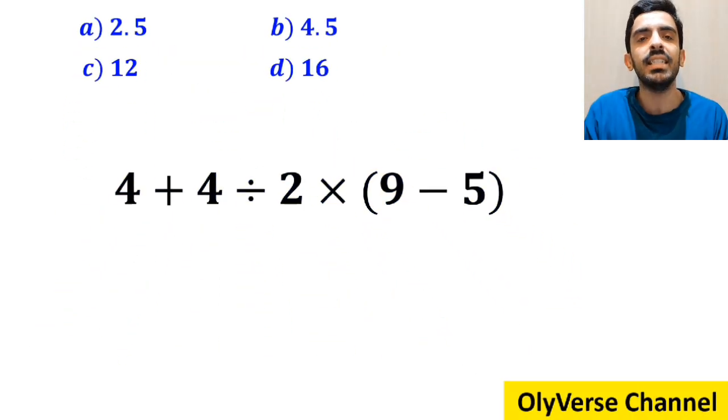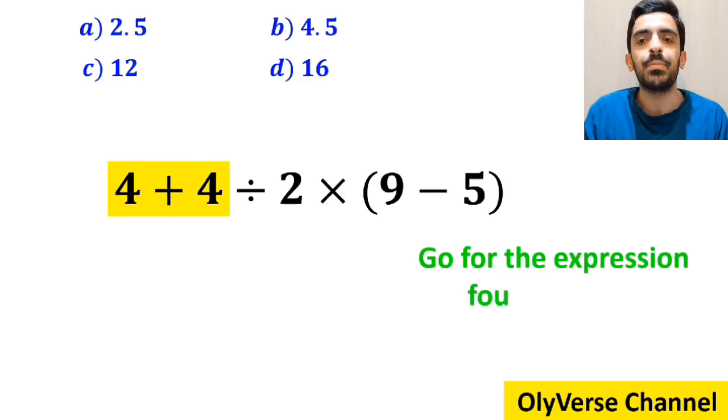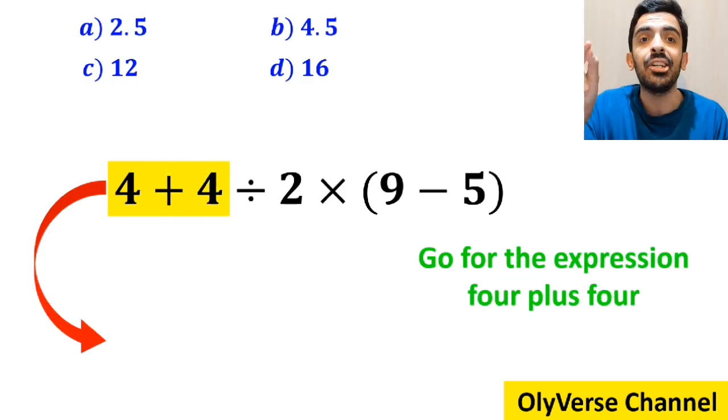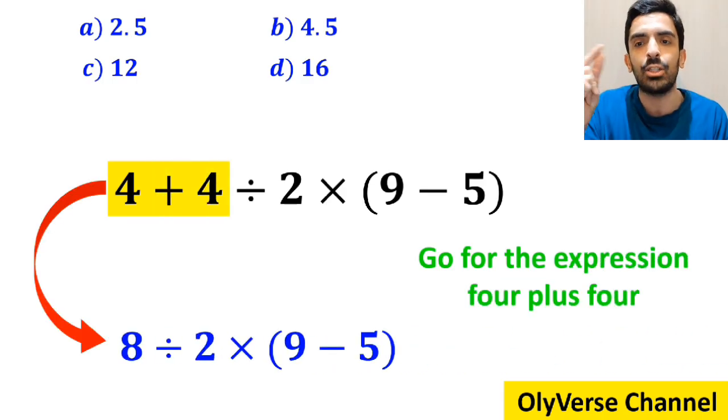Many people, when solving this question, first go for the expression 4 + 4, and write this expression as 8 ÷ 2 × (9 - 5).